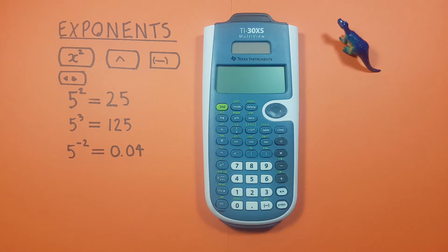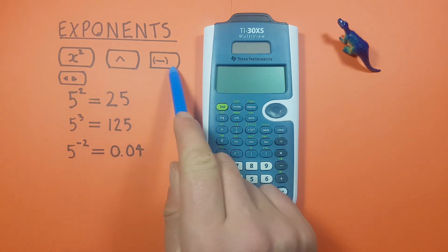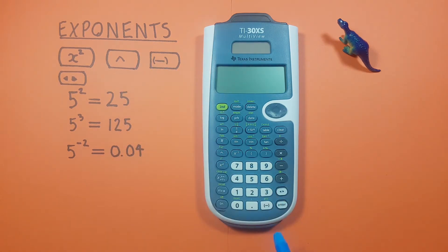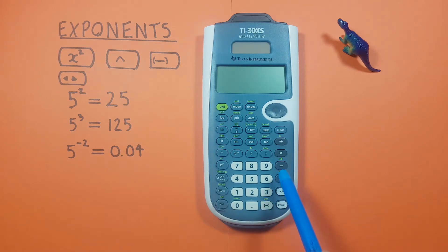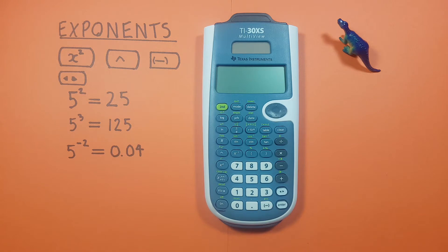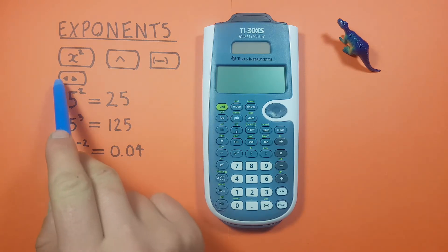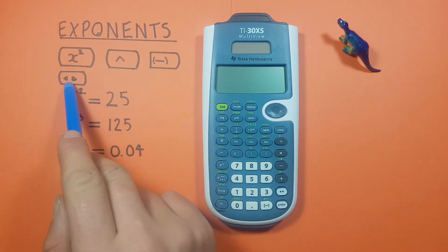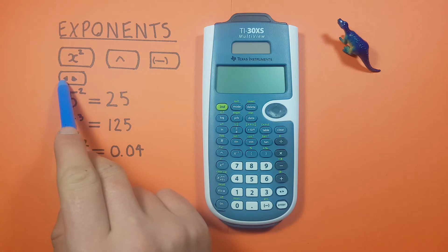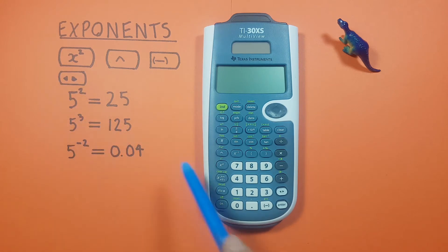The negative key that looks like this, located down here, and it's important to note it's different from the subtraction key — we want the one down here at the bottom. And finally the toggle key that looks like this, like arrows going left and right, located here.